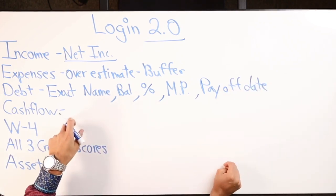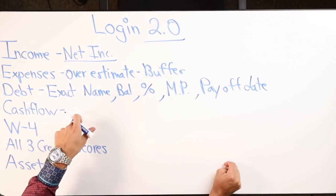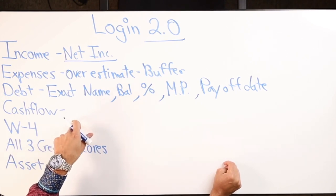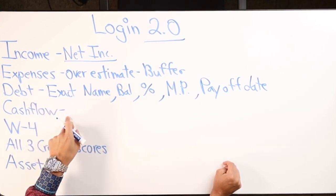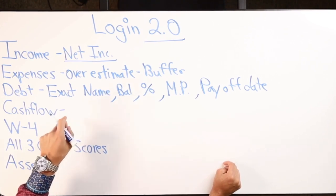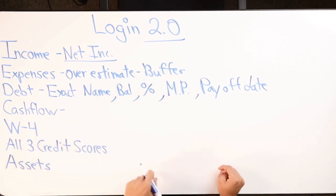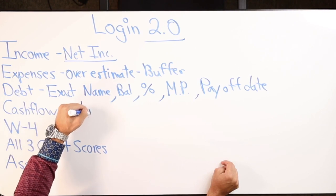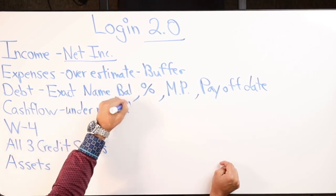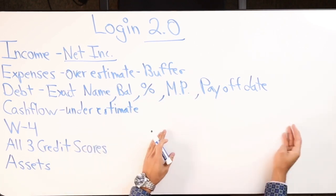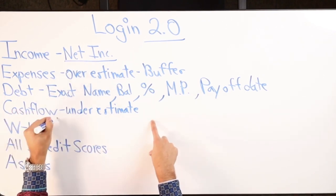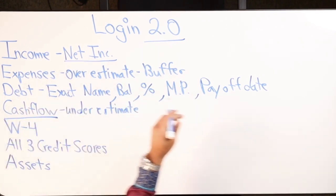The next thing, this is the most important number in your finances for all my kingdom citizens. If you do not know this number, you are lost financially, not spiritually. I'm only going to be questioning your finances in Login 2.0. So what is your monthly cash flow? And I want you to underestimate this number. So again, be very conservative. Don't pick a number that you know you don't do.